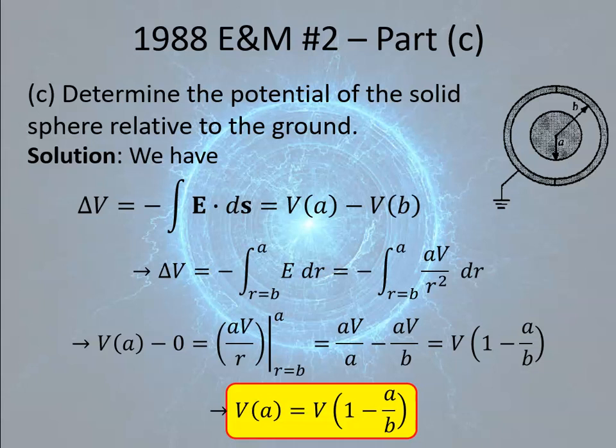Where were the points awarded here? They gave one point for writing the potential difference as that integral. They gave one point for correct limits going from R equals B to R equals A. They gave one point for plugging in the value of the electric field in the integral. They gave one point for a correct integration result, and then they gave one point for the final answer.